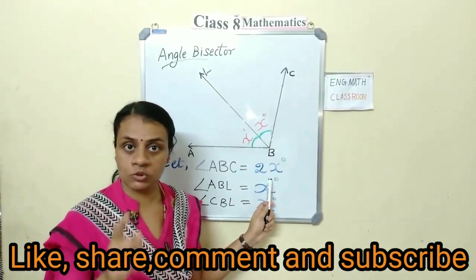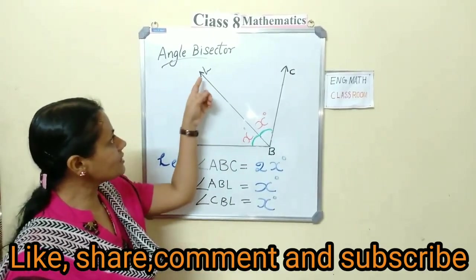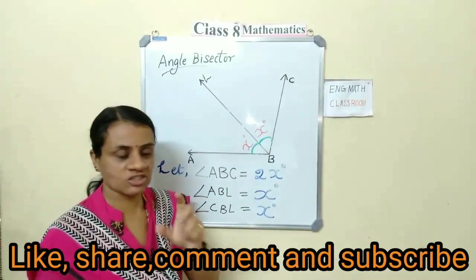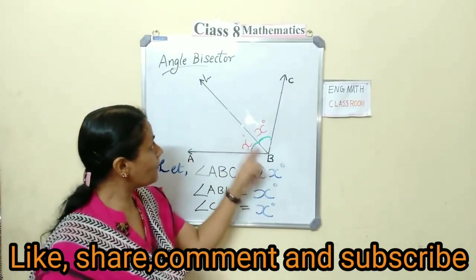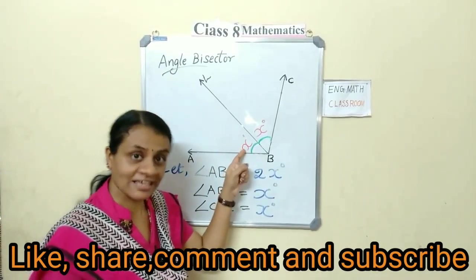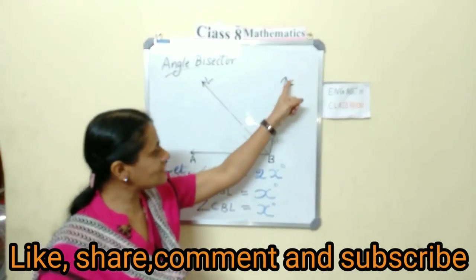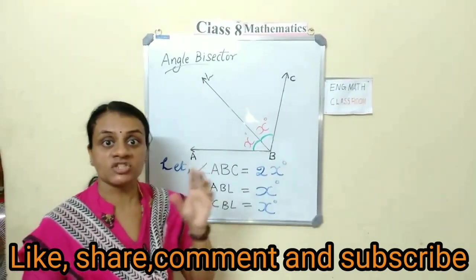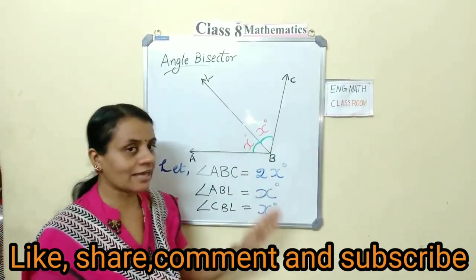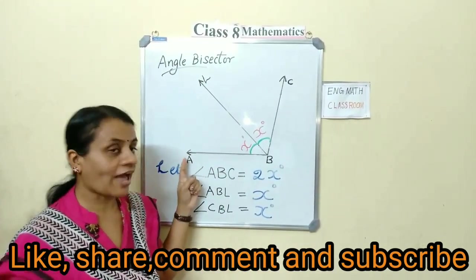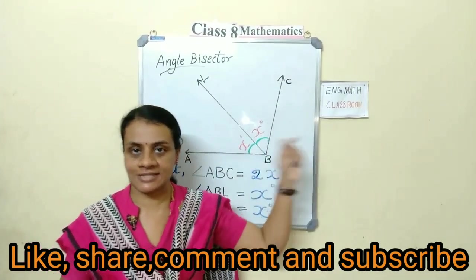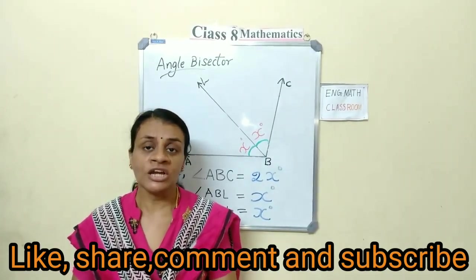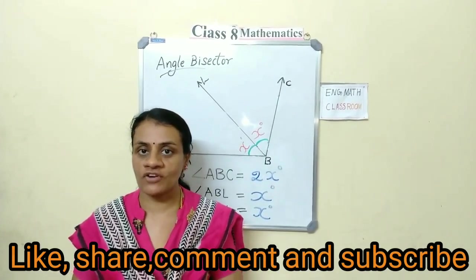Let us suppose angle ABC equals 2x degrees. This line bisects angle ABC such that angle ABL equals x degrees and angle CBL equals x degrees. This shows that line L is the angle bisector of angle ABC. Now here is a question: draw an angle of 100 degrees and draw its angle bisector.